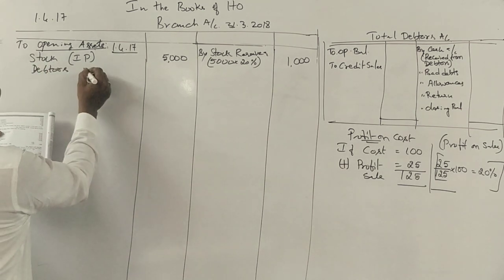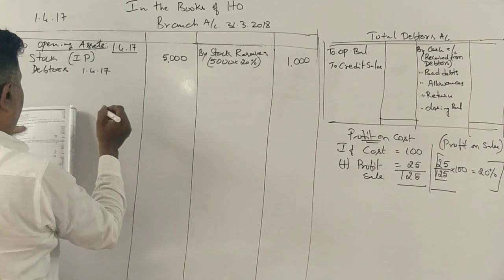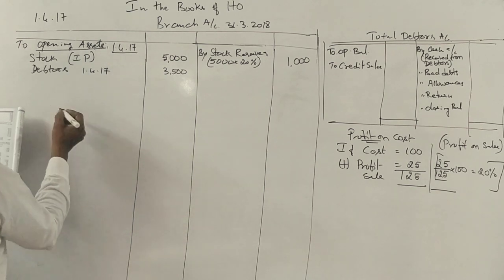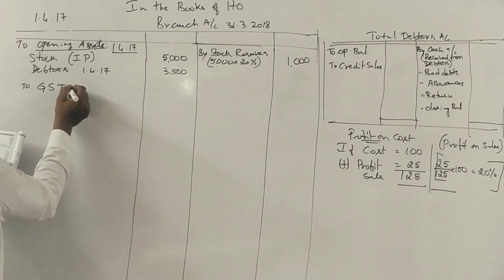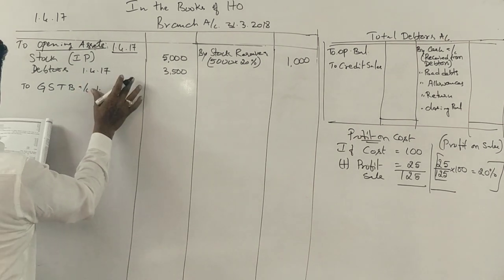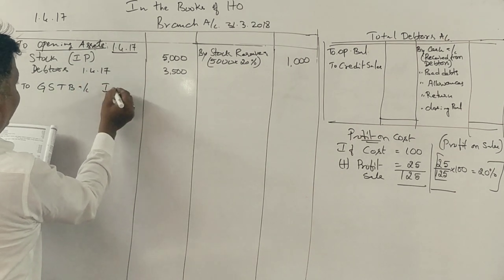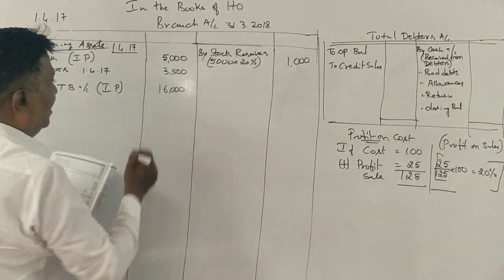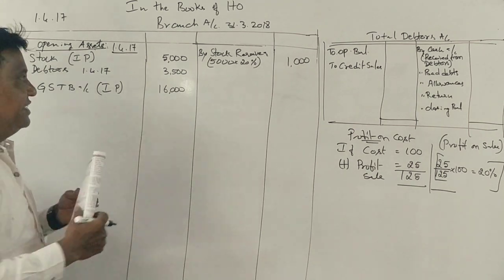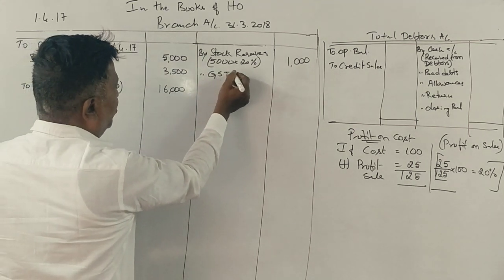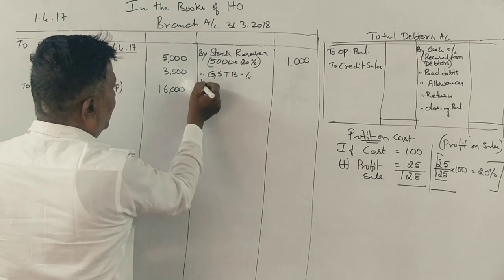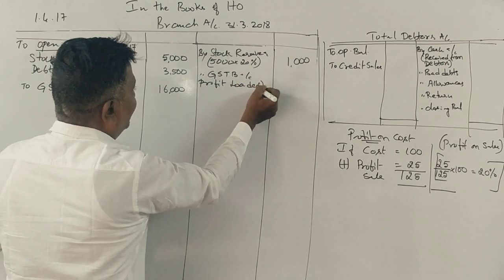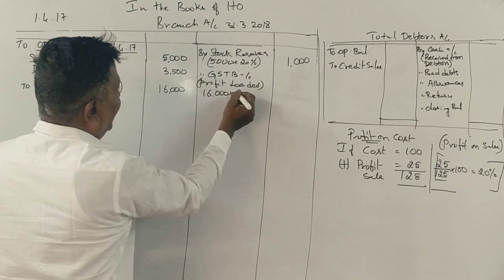Next, goods sent to branch account: 16,000 rupees with 3,000 loaded. How much profit is loaded in this 20,000? 20% profit is loaded, which is 3,200 rupees.